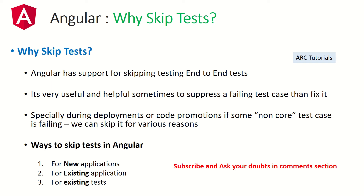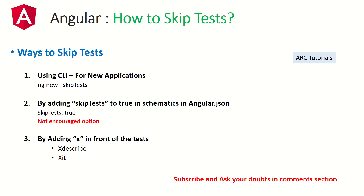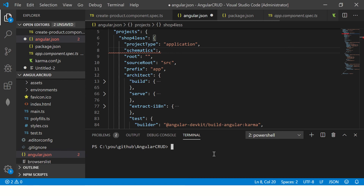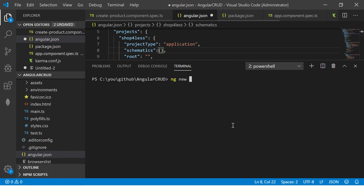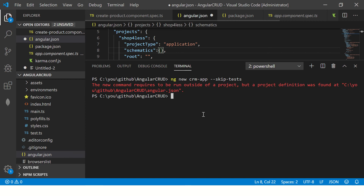We can skip tests in three ways: first for new applications, second for existing applications, and third for existing test scripts. The first option is to tell the Angular CLI that you're not interested in tests. This is sometimes considered a bad practice, but it's useful when your manager gives you a task to do a POC or R&D where you're only interested in building functionality quickly. The command for that is: ng new <application-name> --skip-test. You need to be outside of any existing application project directory when you run this.